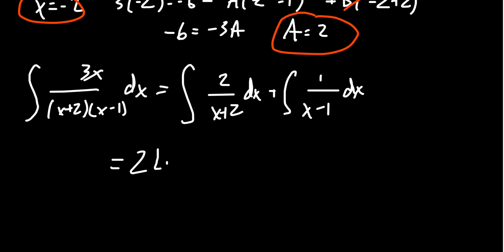We're going to get 2 times the natural log of the absolute value of x+2, plus the natural log of the absolute value of x-1, plus a constant. And this is our antiderivative.